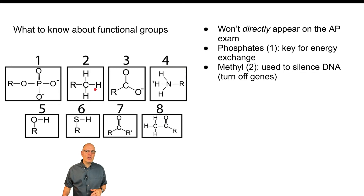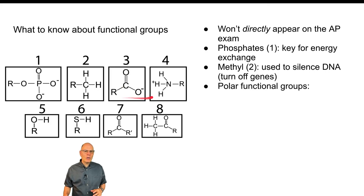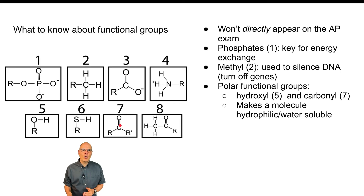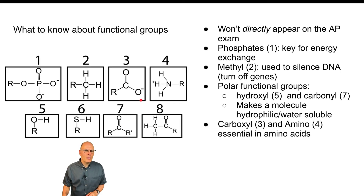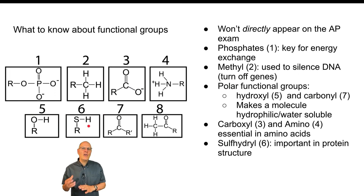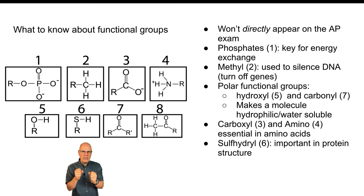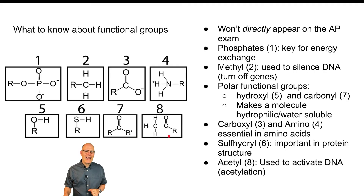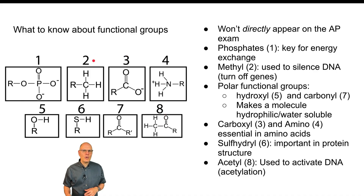There are a couple of polar functional groups to know about: the hydroxyl group and the carbonyl group — they make molecules hydrophilic or water-soluble. The carboxyl group and the amino group are essential in amino acids, which have an amino group and are acidic because they have a carboxyl group. The sulfhydryl group is very important for protein structure — it creates a stabilizing bond that holds proteins in a specific three-dimensional shape. The acetyl group is used to activate DNA through a process called acetylation, which is kind of the opposite in function from the methyl group.